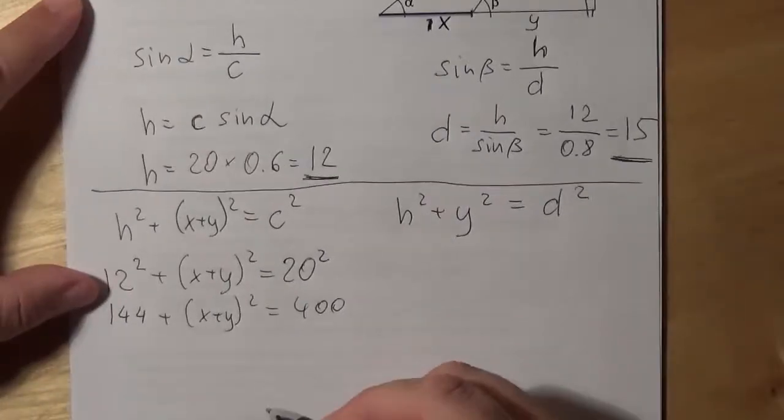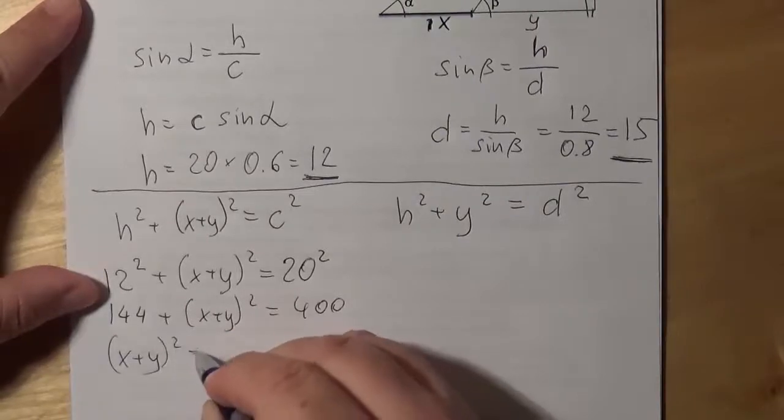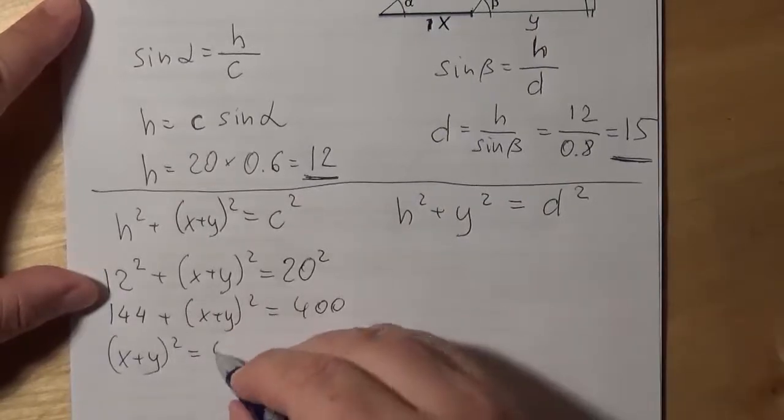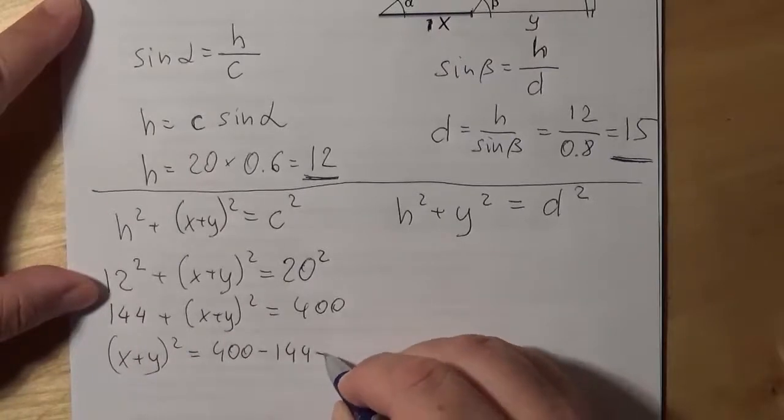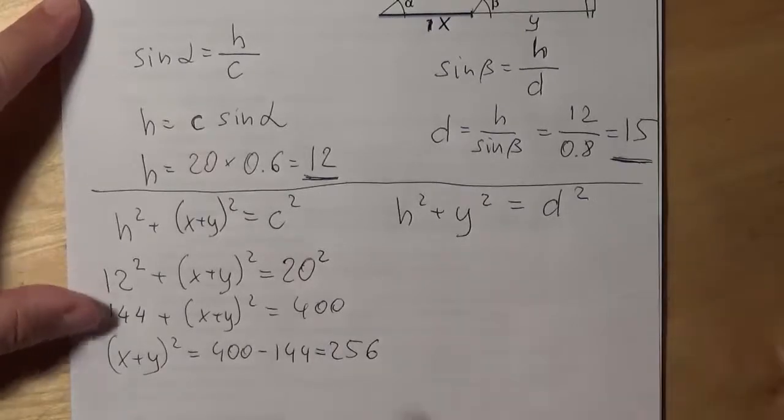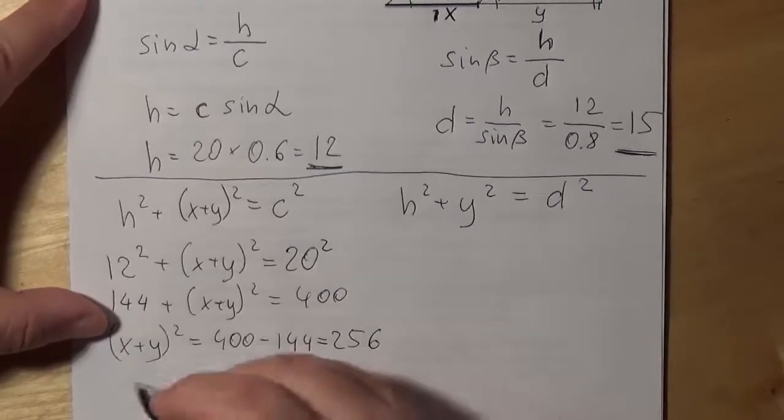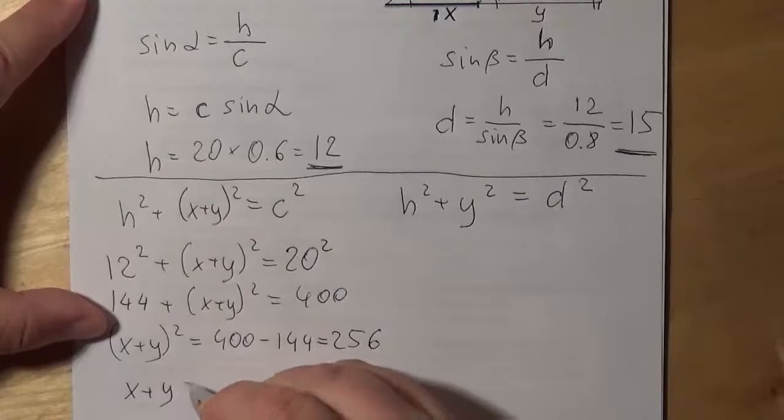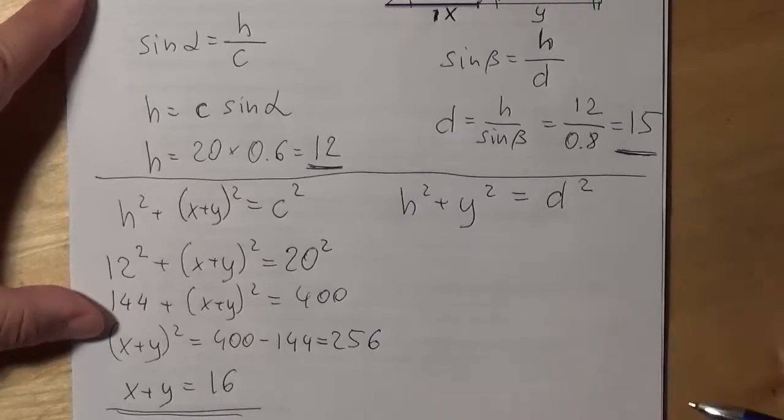So X plus Y squared equals 400 minus 144. It is 256. If we know that, we can apply square roots to these values, and we will get X plus Y equals 16. That's a very crucial information. We are very close now to the final solution.